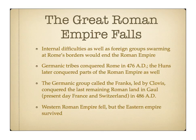So let's talk about the fall of Rome — internal difficulties, which we discussed, but also foreign groups swarming at Rome's borders. We saw Germanic tribes, and we saw the Huns, which would later conquer parts of Rome as well. Remember the date — 476 AD. Germanic tribes came into the empire, conquered Rome, and Rome fell. At least the western half of Rome fell. The last nail in the coffin was led by Clovis, a Germanic king who led a group called the Franks. They conquered the last remaining Roman land in Gaul, which we know as present-day France and Switzerland.